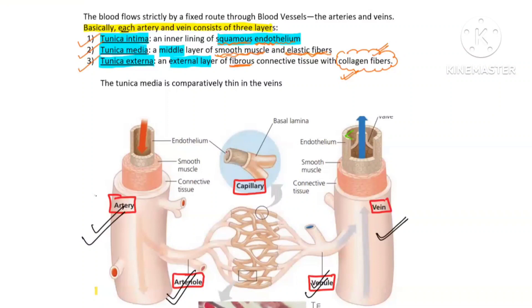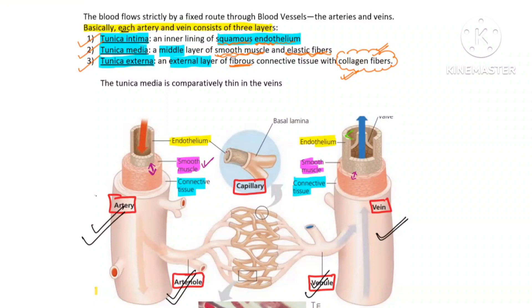Now looking at the diagram carefully: tunica externa with connective tissue is present in both artery and vein. The second layer, tunica media with smooth muscles, is also present in both artery and vein. The innermost endothelium is also present in both. However, focus carefully: in the artery, the smooth muscle layer is very thick, whereas in the vein the smooth muscle is not thick. Arteries have more smooth muscle in the tunica media compared to veins, because arteries have to bear the pressure when the heart pumps blood into them at high pressure.